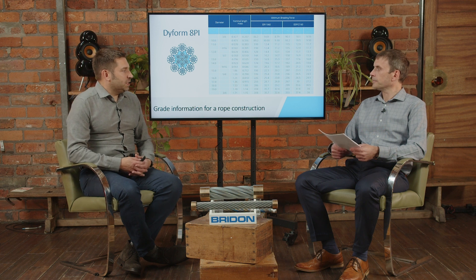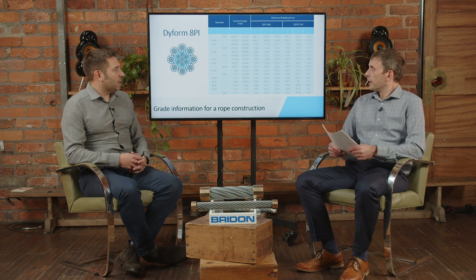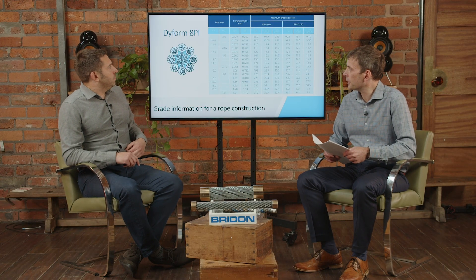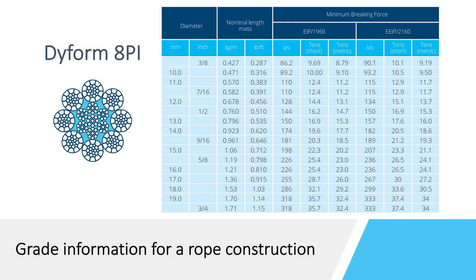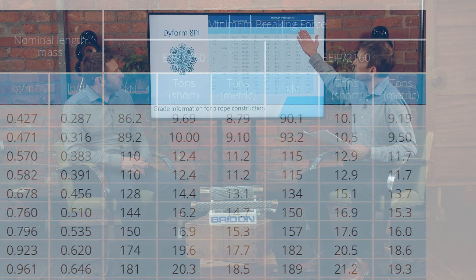The topic of today is rope grades, and it's a rather complicated one. So the first question is: Owen, what is a rope grade and how are they used? Rope grade is a term used in the international standards for the rope industry and it's a way of grouping and classing ropes together. Here we've got 1960 grade and 2160 grade, which are just two examples of grades that we use within the rope industry.